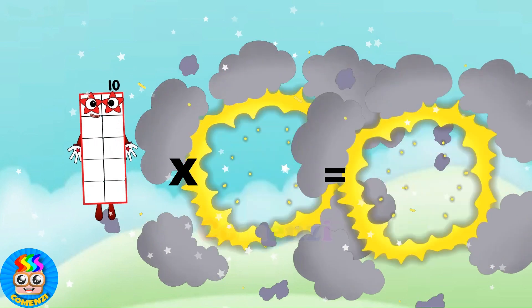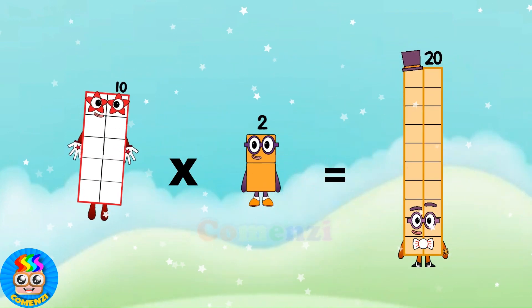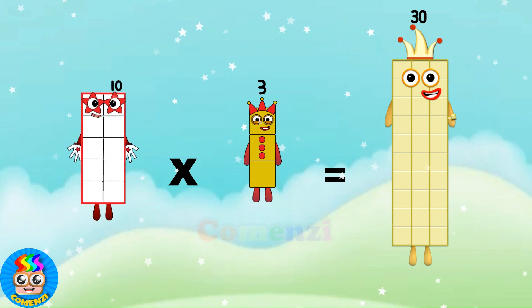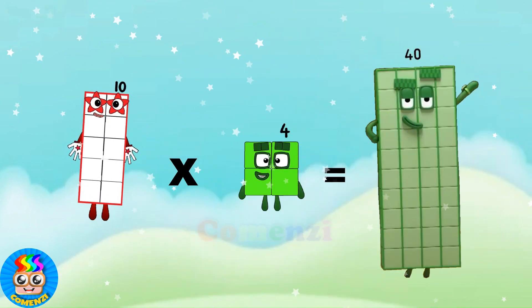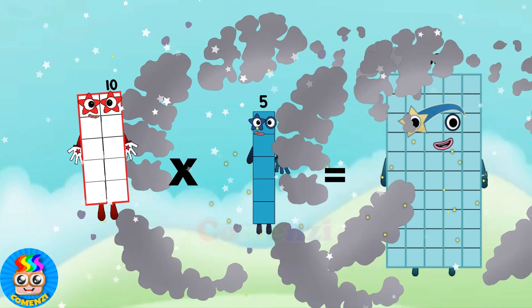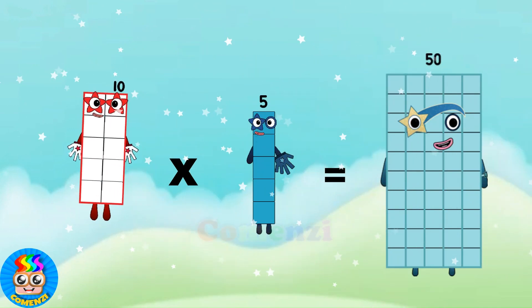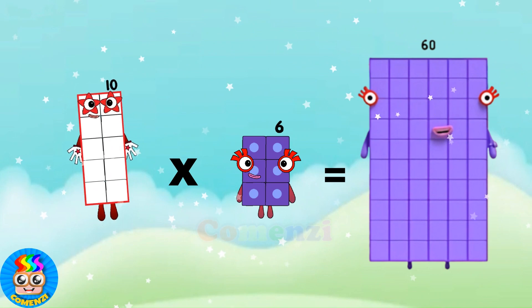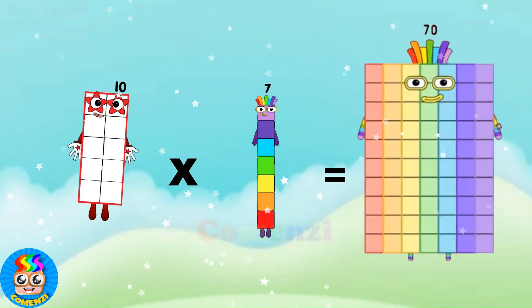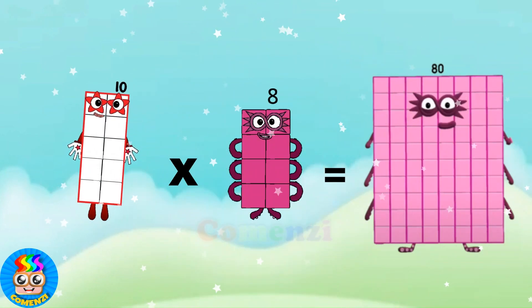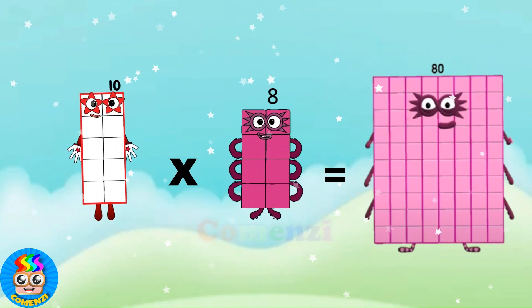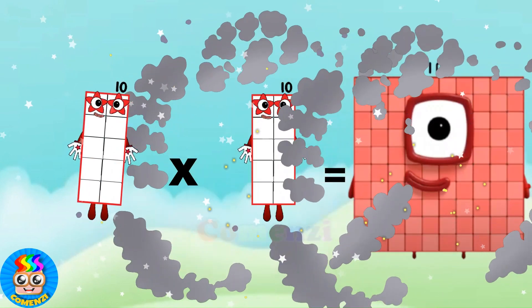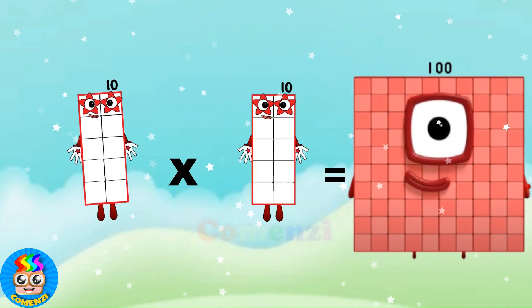10 x 1 is 10. 10 x 2 is 20. 10 x 3 is 30. 10 x 4 is 40. 10 x 5 is 50. 10 x 6 is 60. 10 x 7 is 70. 10 x 8 is 80. 10 x 9 is 90. 10 x 10 is 100.